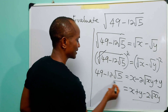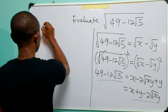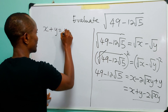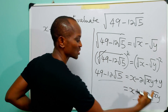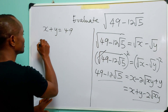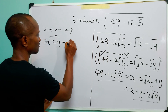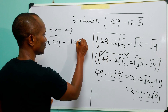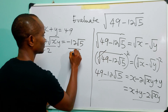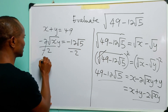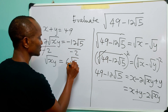So this is equal to x plus y minus 2 root(xy). Looking at the right-hand side and the left-hand side of this equation, we can see that x plus y must be equal to 49. And we can see that minus 12 root 5 must be equal to minus 2 root(xy), so we have minus 2 root(xy) equals minus 12 root 5. We can divide both sides by minus 2.